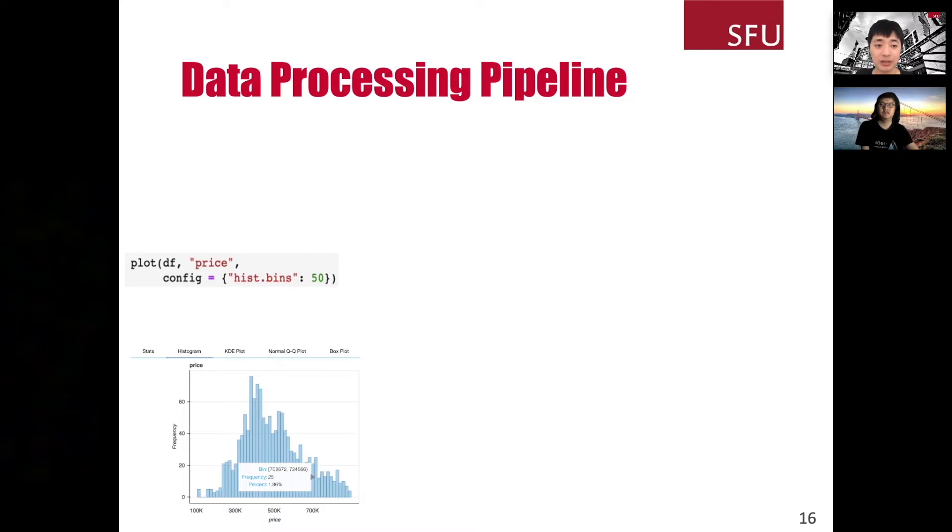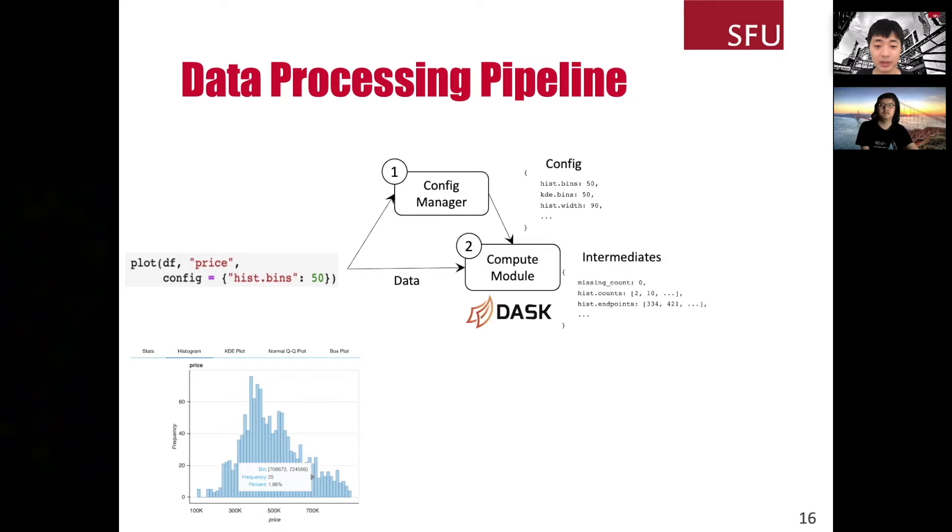Once we decided a set of visualizations that we need to compute, the next step is to actually compute it. There are three steps in our data processing pipeline. First, our config manager will parse the config parameter of the plot function, because some of the configurations directly control the computation. One example is the computation of the histogram, where the number of bins is a parameter of the histogram computation. Next, we use the Dask computation framework to compute the data that is required for the visualizations at once. Using Dask allows us to parallelize the computations, as well as cut off redundant computations. Once the computation is done, we put the data which is ready for plotting into a container called intermediates. And then we use Bokeh to render the plot based on the data inside the intermediates. So that's how DataPrep.eda works under the hood.